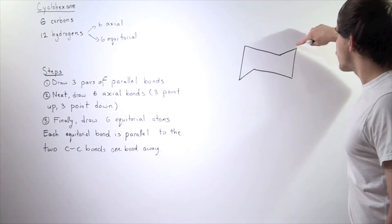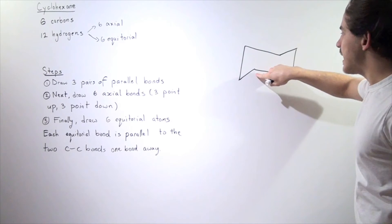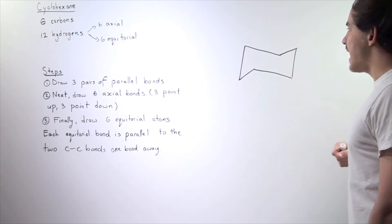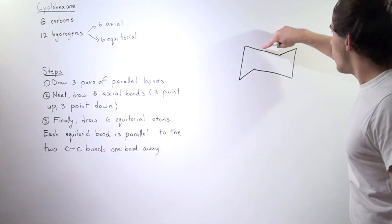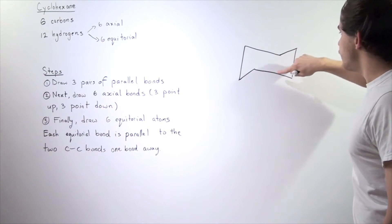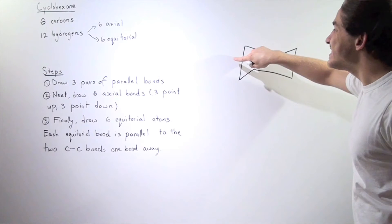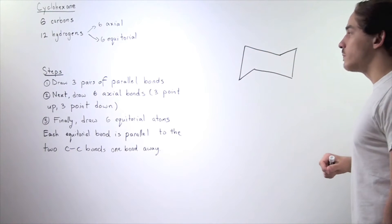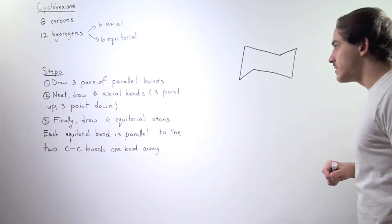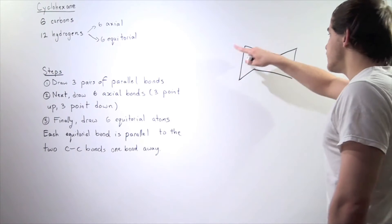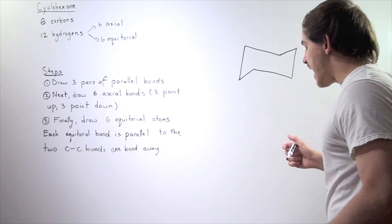So we have one, two, three, four, five, six carbon atoms, and one, two, three, four, five, six carbon-carbon bonds. So this is our carbon backbone.